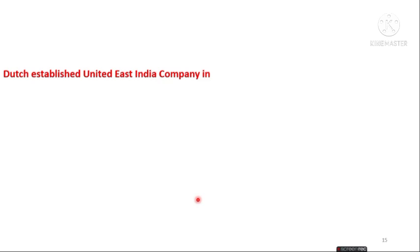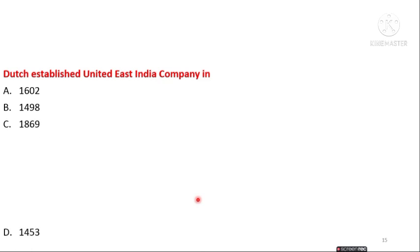The next question is: the Dutch established the United East India Company in which year — 1602, 1498, 1869, or 1453? Option A is the right answer — in 1602, the Dutch established the United East India Company.